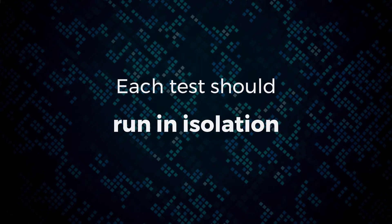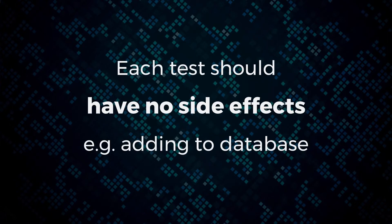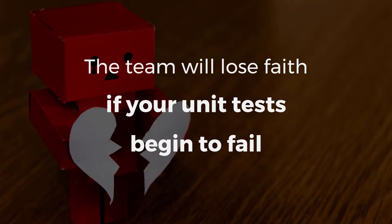Each test should run in isolation, meaning you don't rely on the results of previous tests. Each test should have no side effects — for example, don't let a second test rely on the database state created by the first test. You want each test to be able to run in any order. Ultimately, if your tests are unreliable, your team will lose faith in them and won't want to write tests.